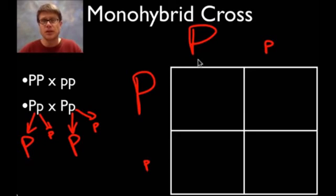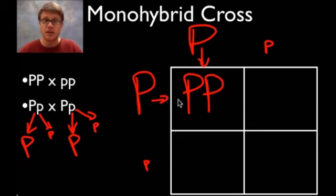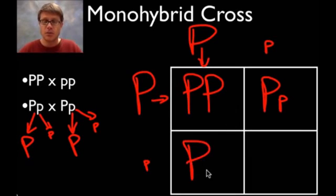Now we simply fill in the boxes. This would be a big P with a big P, because I'm taking this here and that there. This is going to go over to here to give us a big P and a little p. By convention we usually write the dominant allele first, so that would be one alternative here. Here would be a big P, little p as well. Finally we're going to get little p over here and a little p over here, since they're each contributing a little p.